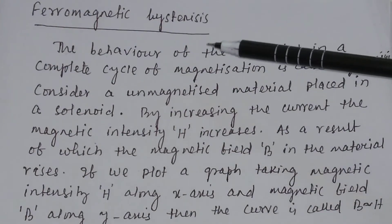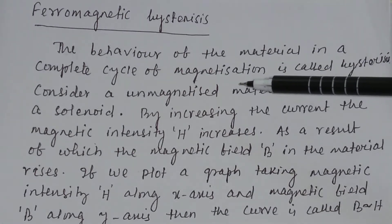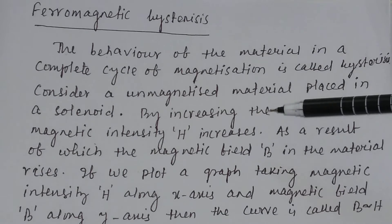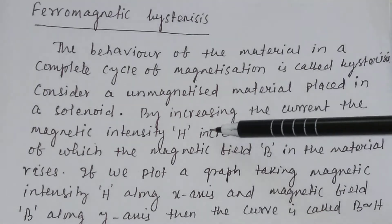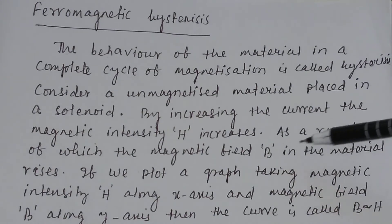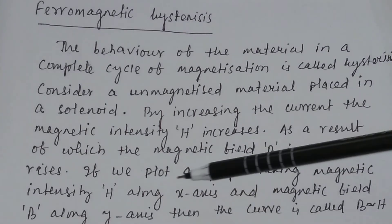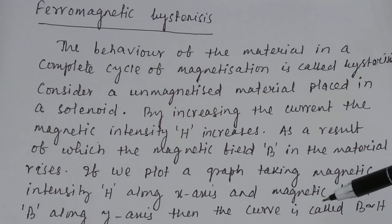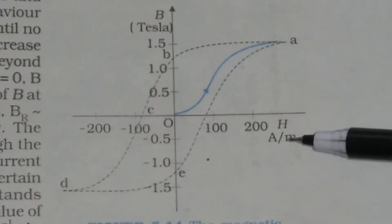Ferromagnetic Hysteresis. The behavior of the material in a complete cycle of magnetization is called hysteresis. Consider an unmagnetized material placed in a solenoid. By increasing the current, the magnetic intensity H increases, as a result of which the magnetic field B in the material rises. If we plot a graph with magnetic intensity H along the x-axis and magnetic field B along the y-axis, the curve is called the BH curve.